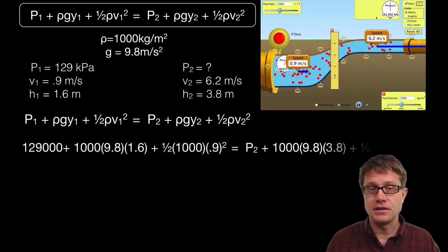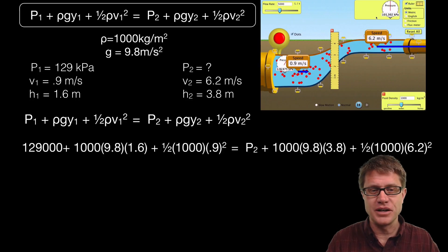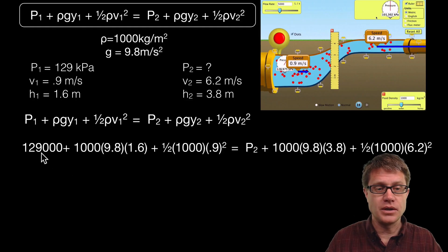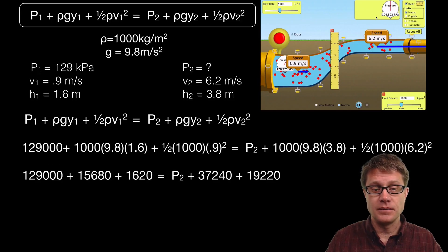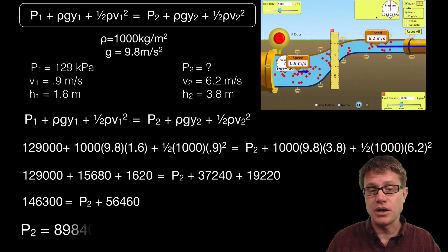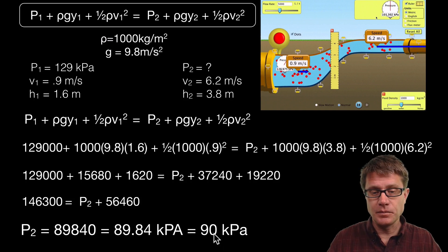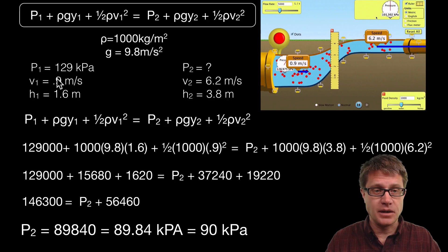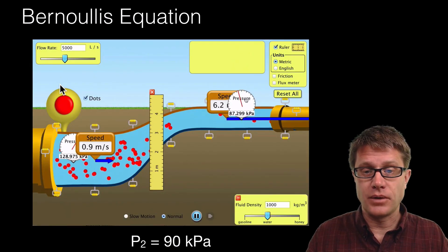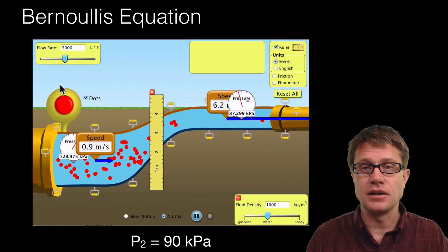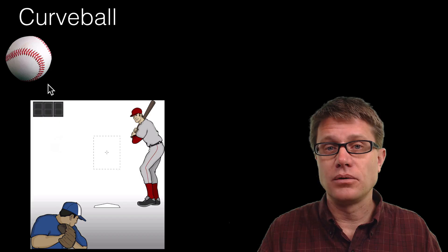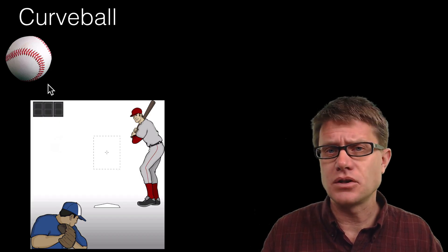To solve it, I write out the full equation with known values. The density of water is 1000 kilograms per meter cubed, gravitational field strength is 9.8 meters per second squared. On the left: pressure is 129 kilopascals (written as 129,000 pascals), along with the known velocity and height. On the right: higher height and higher velocity, so higher energy — meaning lower pressure. Solving for pressure 2 and using significant digits gives approximately 90 kilopascals on the right side, which the simulation confirms at around 87 kilopascals.